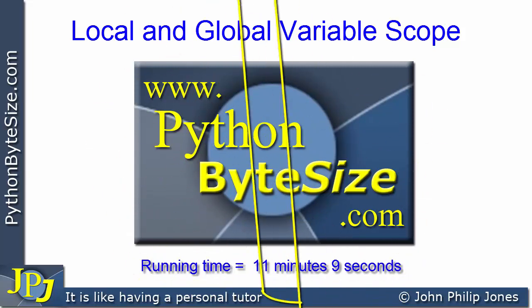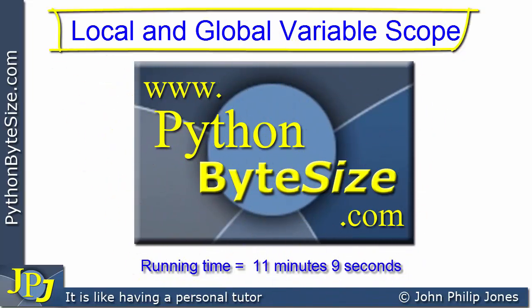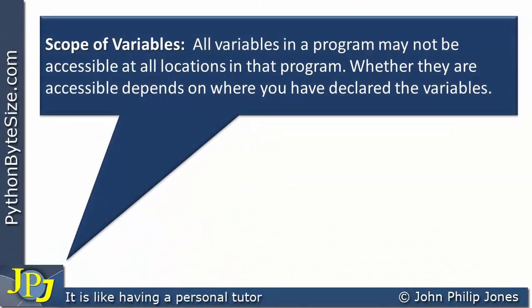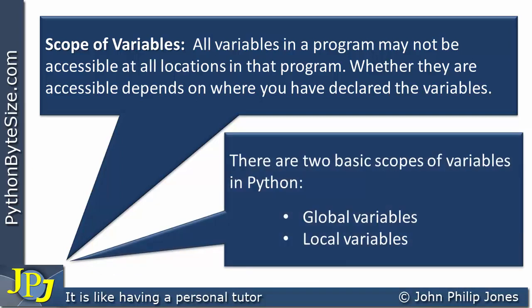In this video, we are going to consider local and global variables. When we consider local and global variables, we need to consider something referred to as the scope of variables. All variables in the program may not be accessible at all locations in that program. Whether they are accessible depends on where you have declared the variables. There are two basic scopes of variables in Python: global variables and local variables.